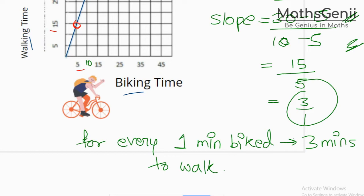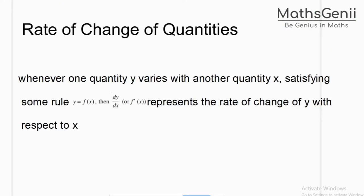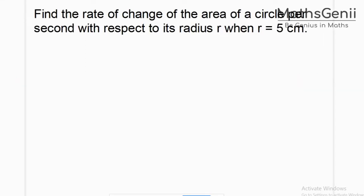This is applied in various fields. Now let us come to a formal definition from this chapter: what is rate of change of quantities? Whenever one quantity y varies with another quantity x — like bike versus walking — it satisfies dy/dx. Slope is represented by dy/dx, which represents the rate of change of y with respect to x.